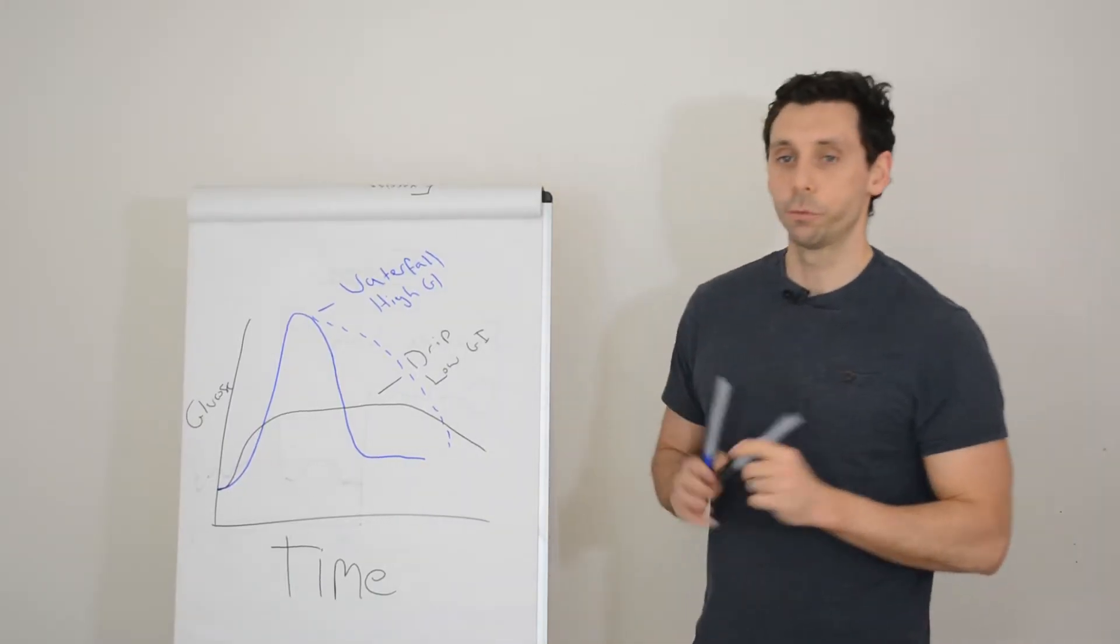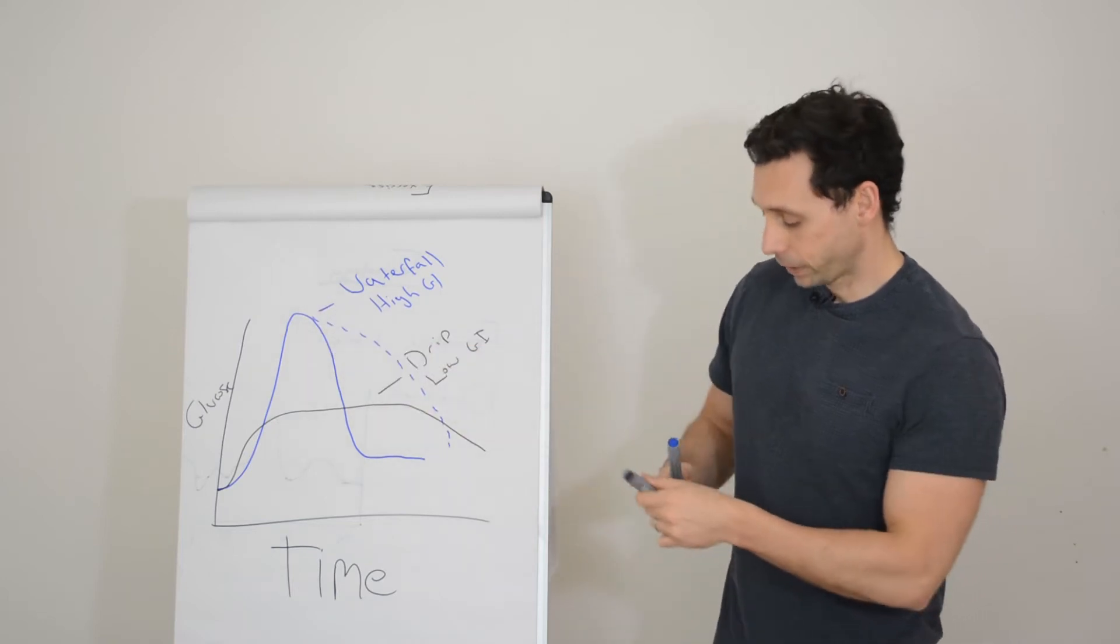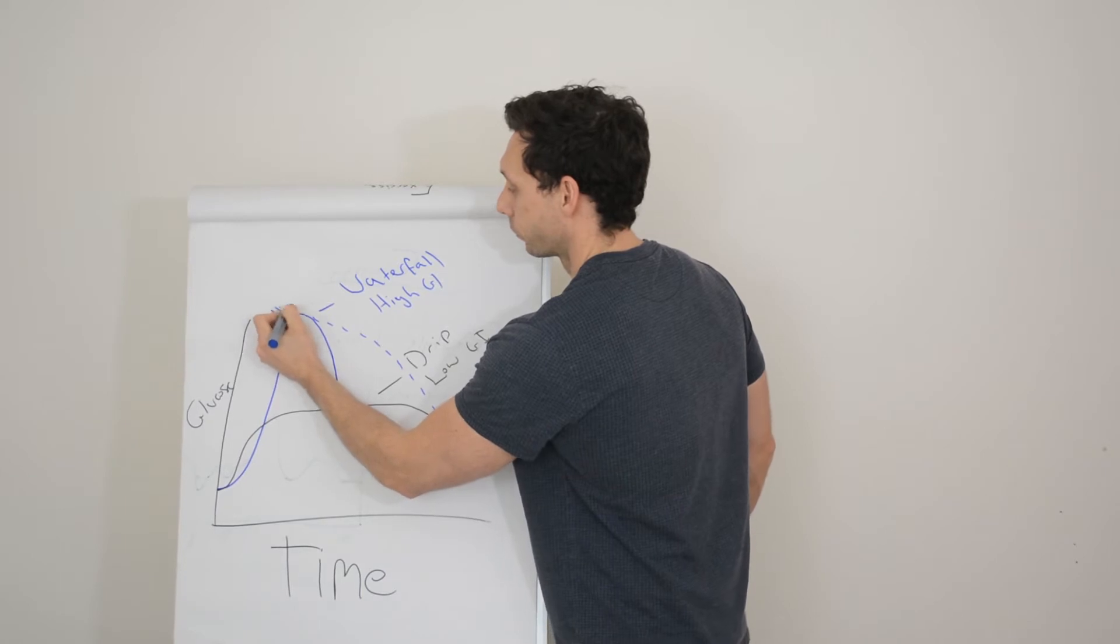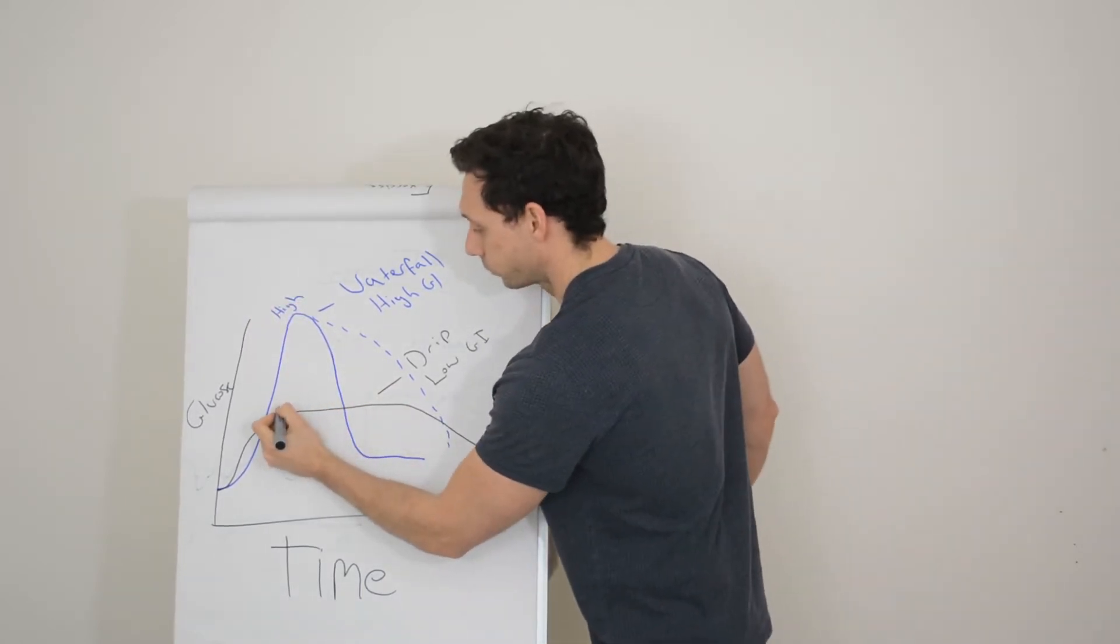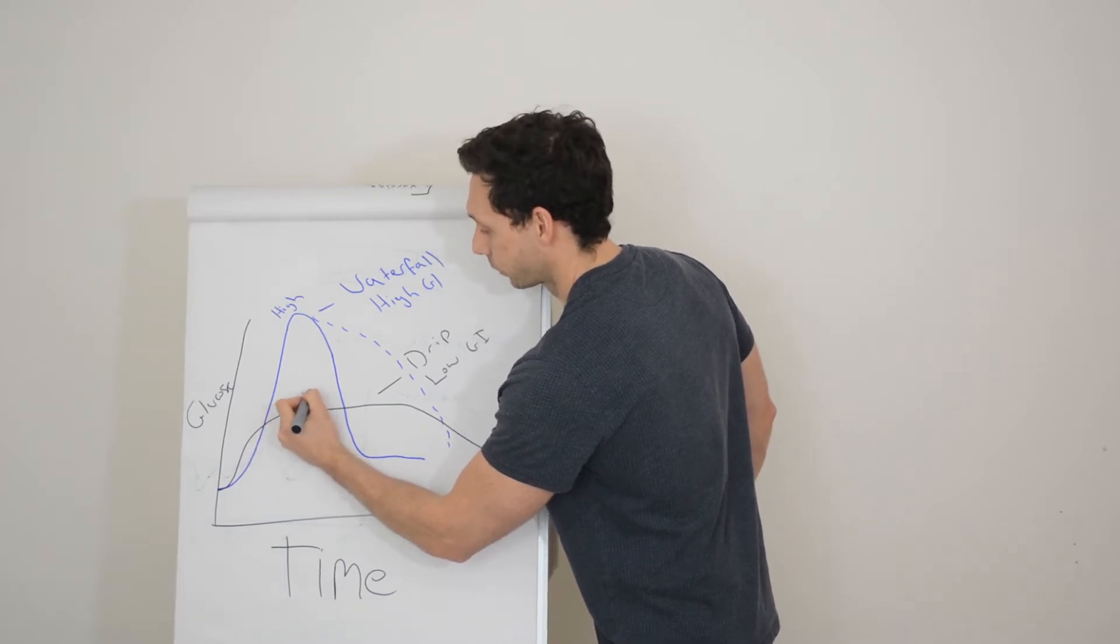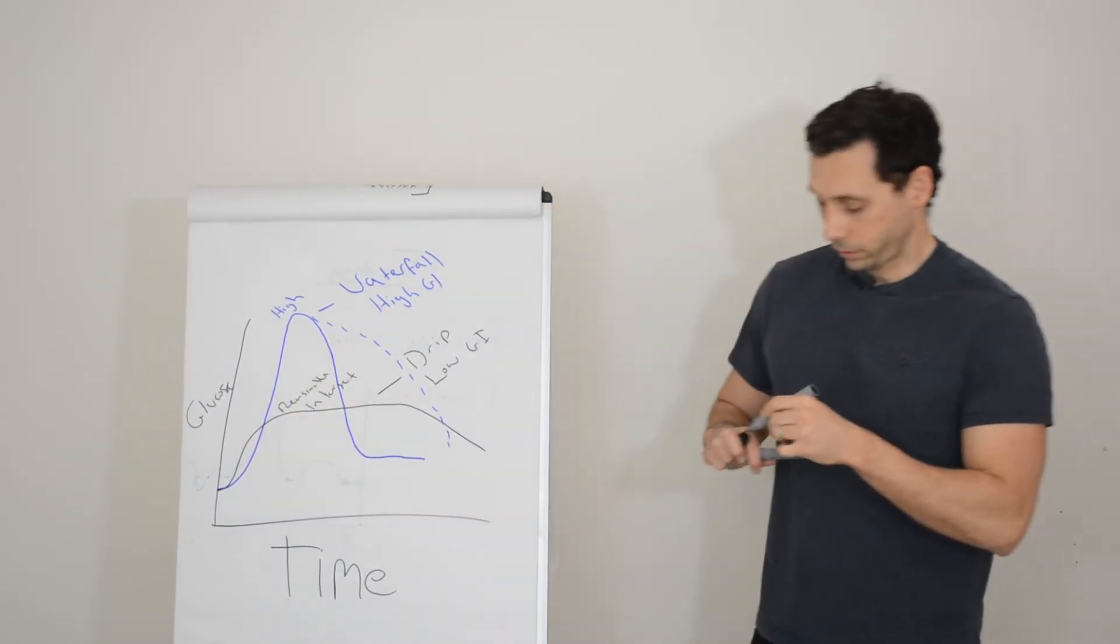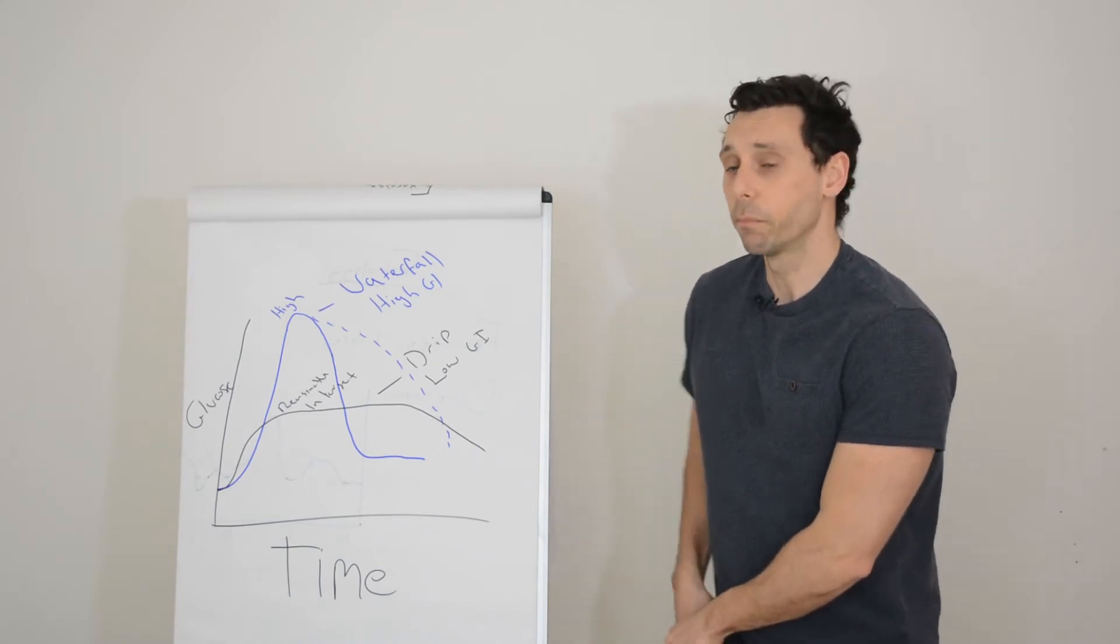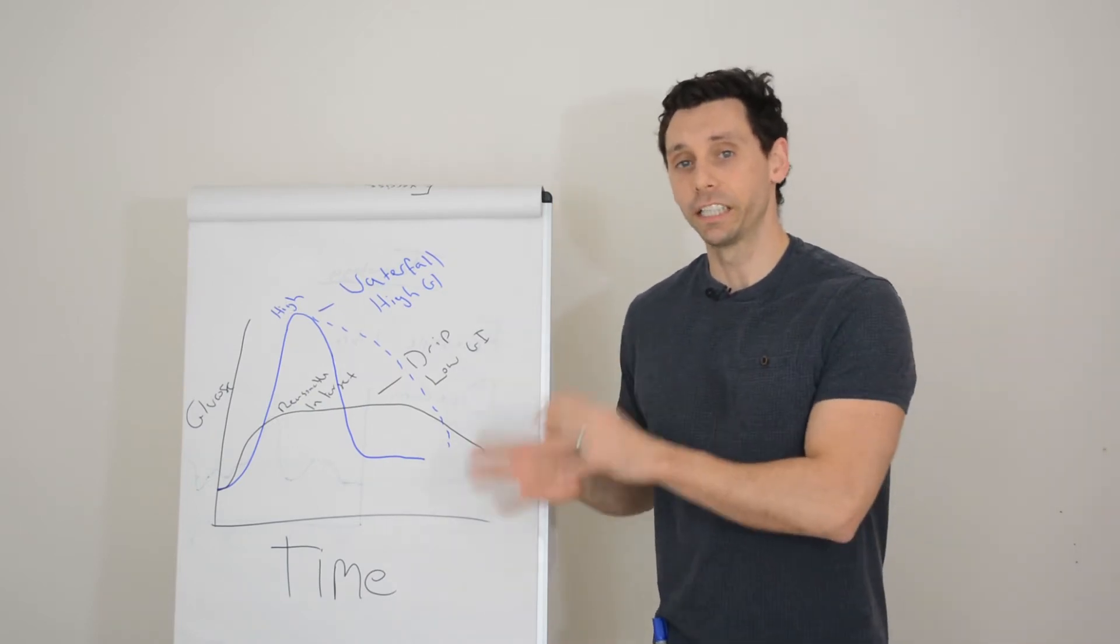Now, as you can see, if we were to measure your glucose levels at a particular time point, namely here, it could be the difference between a high glucose reading and a pretty reasonable one. Let's call it reasonable glucose level or in target glucose level. Now, this might be despite the fact that you've eaten the same amount of carbohydrate at these meals. It's just how your body deals with them.